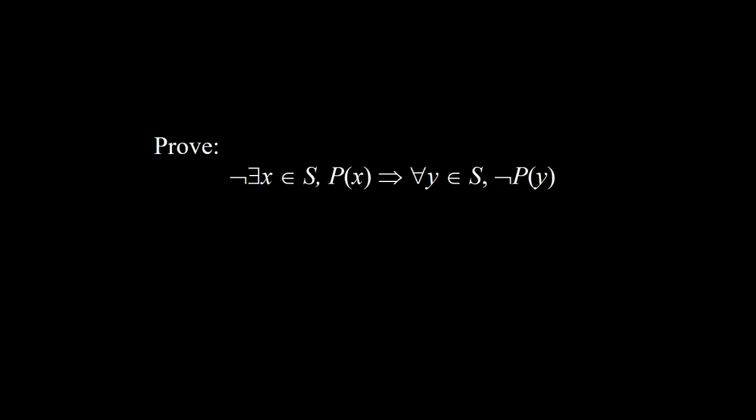Example one: prove that the following is a logical implication. Not for some x element of s, px, implies for all y element of s, not py. This is an implication consisting of the premise on the left, indicated with yellow, and the conclusion on the right, indicated with blue.